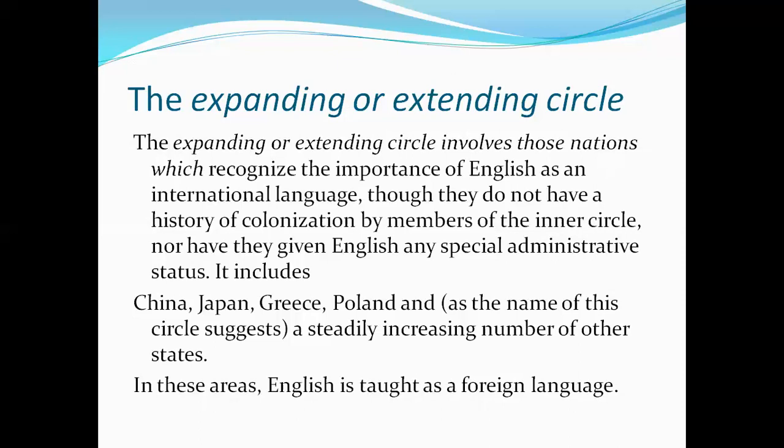So the three circles claimed by Braj Kachru are: the inner circle where English is spoken as the mother language in five countries; the outer circle where English is used as the second language; and the expanding circle, which is the third circle, where English is used as either a foreign language or an international language.